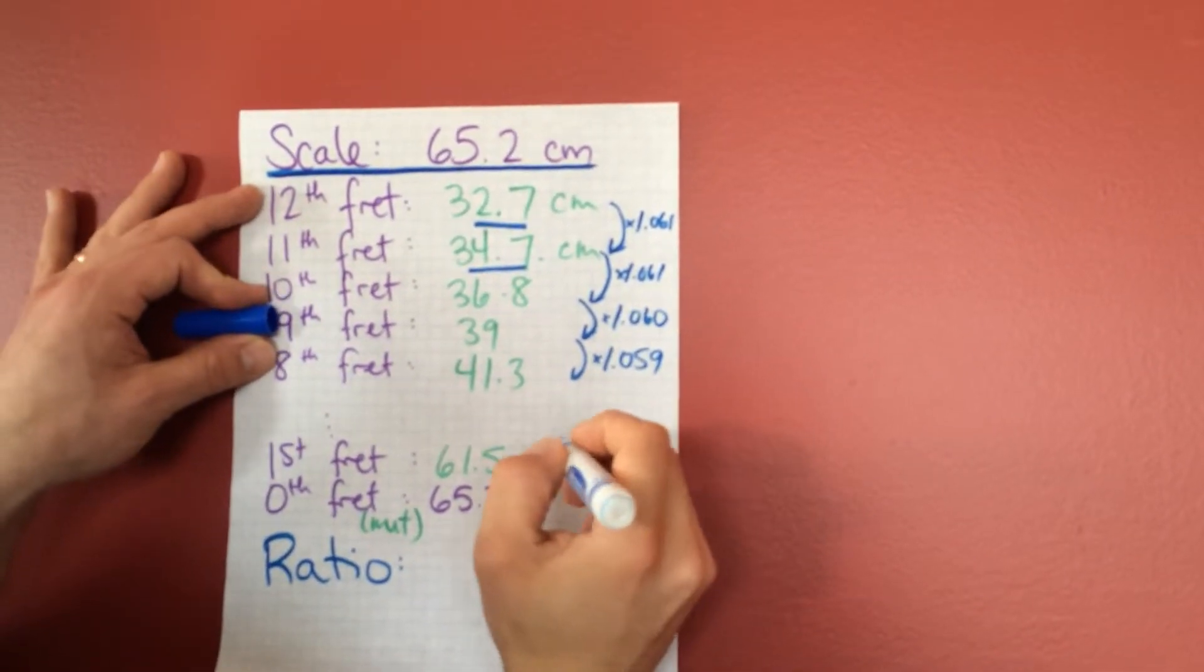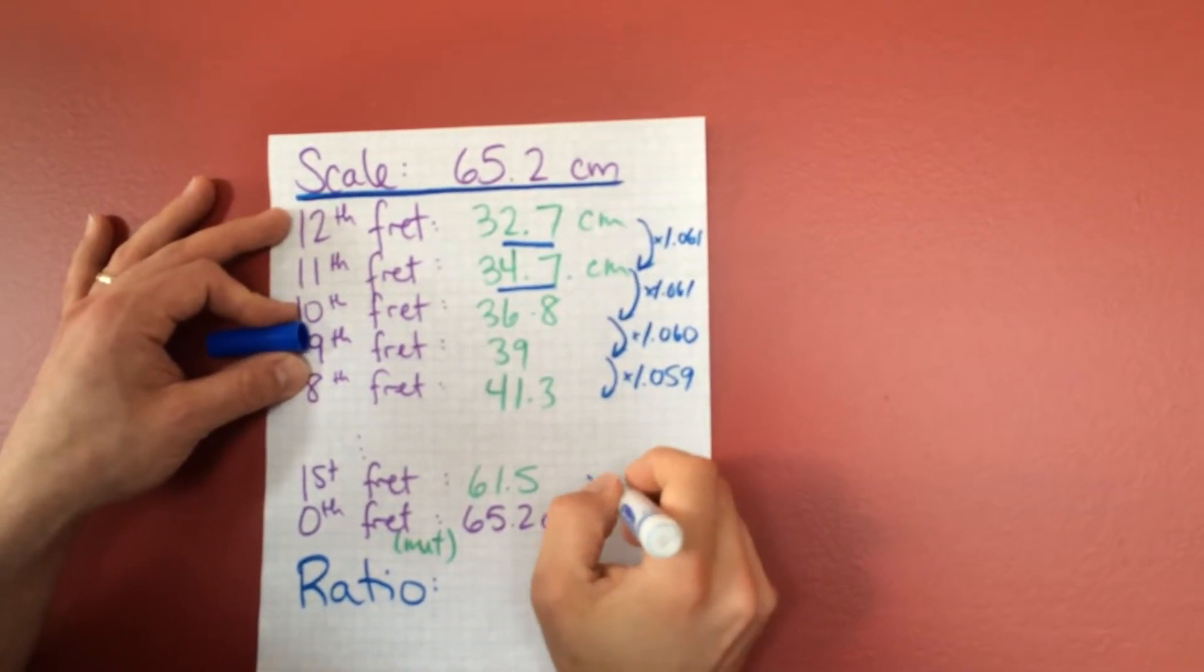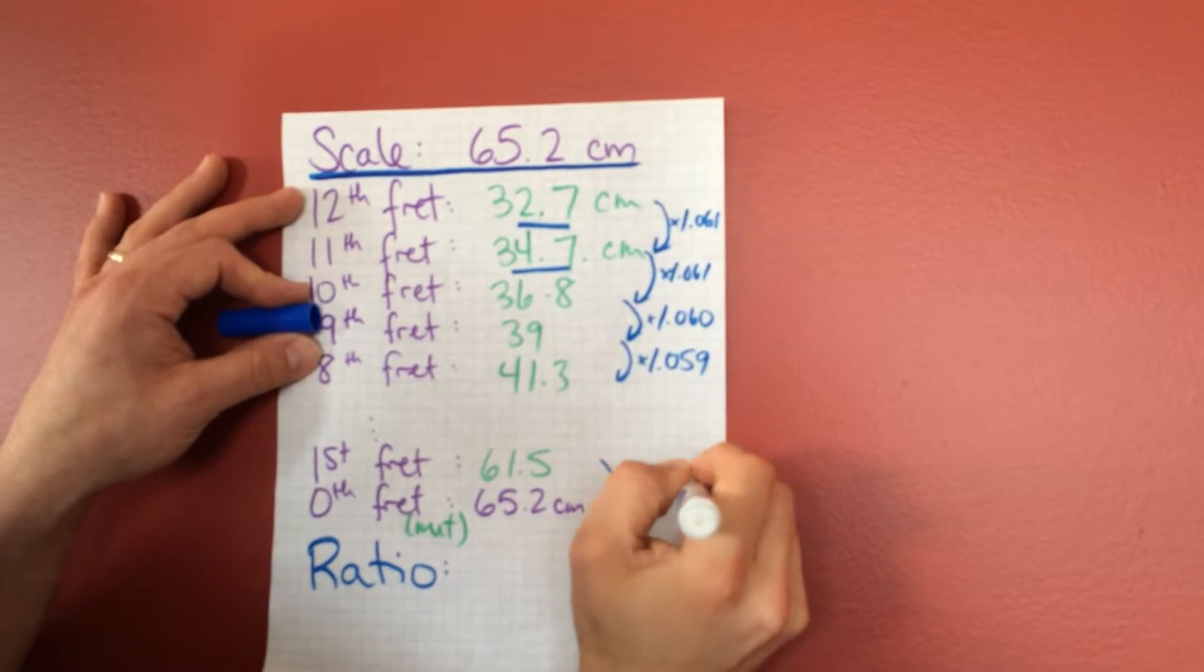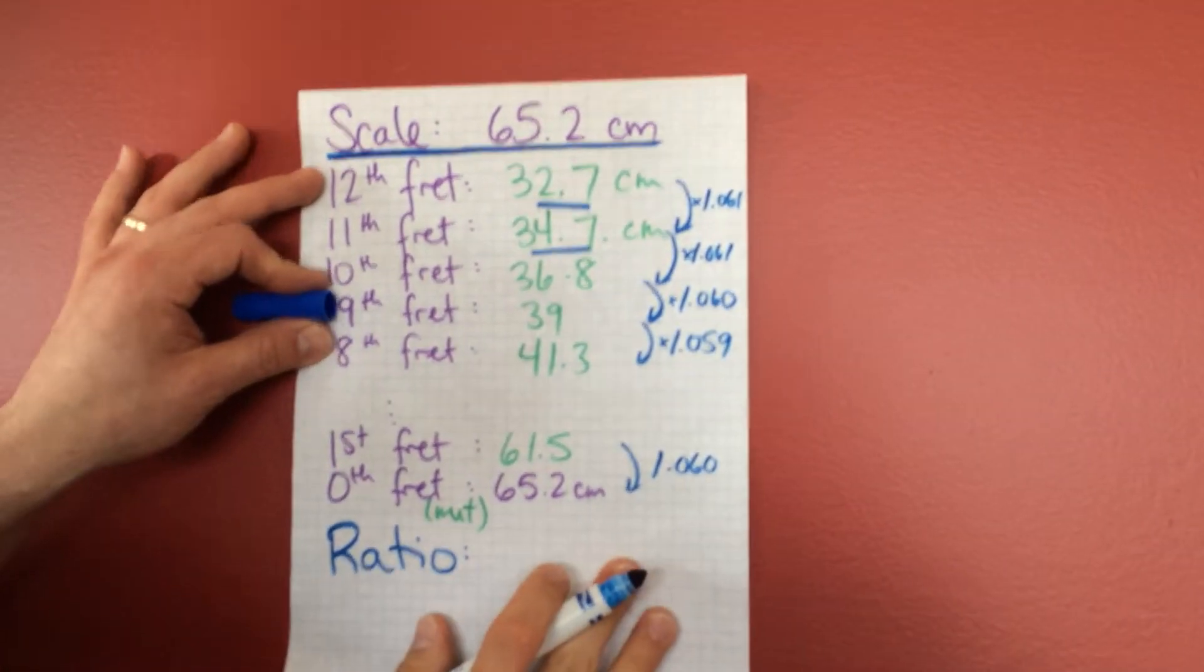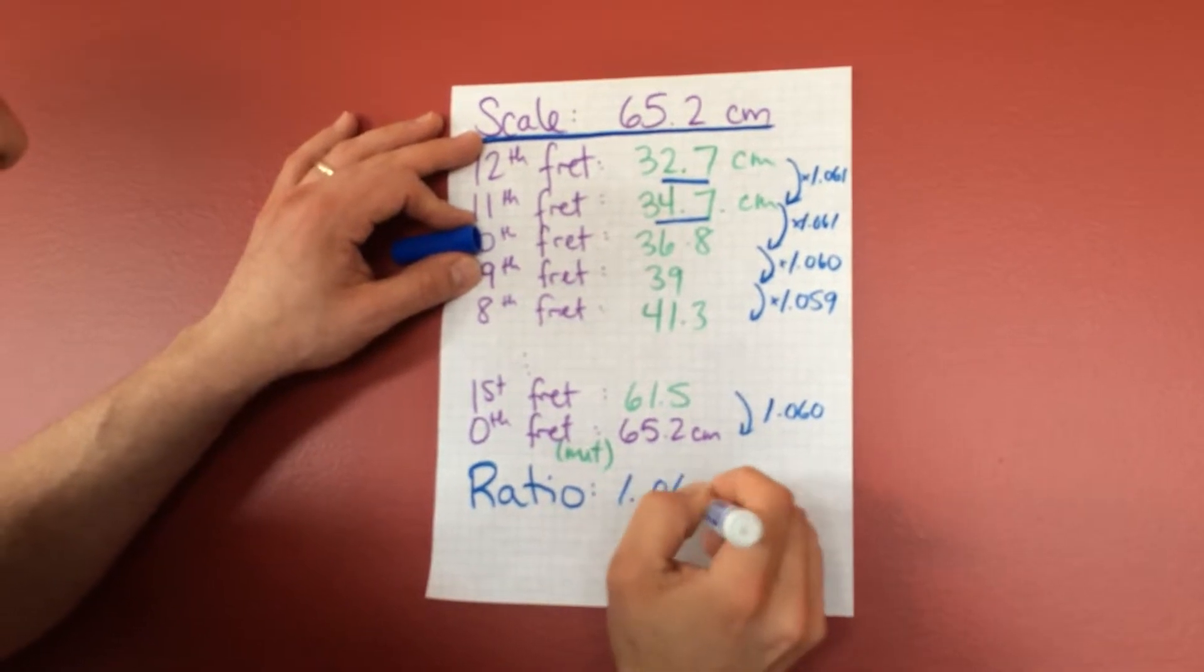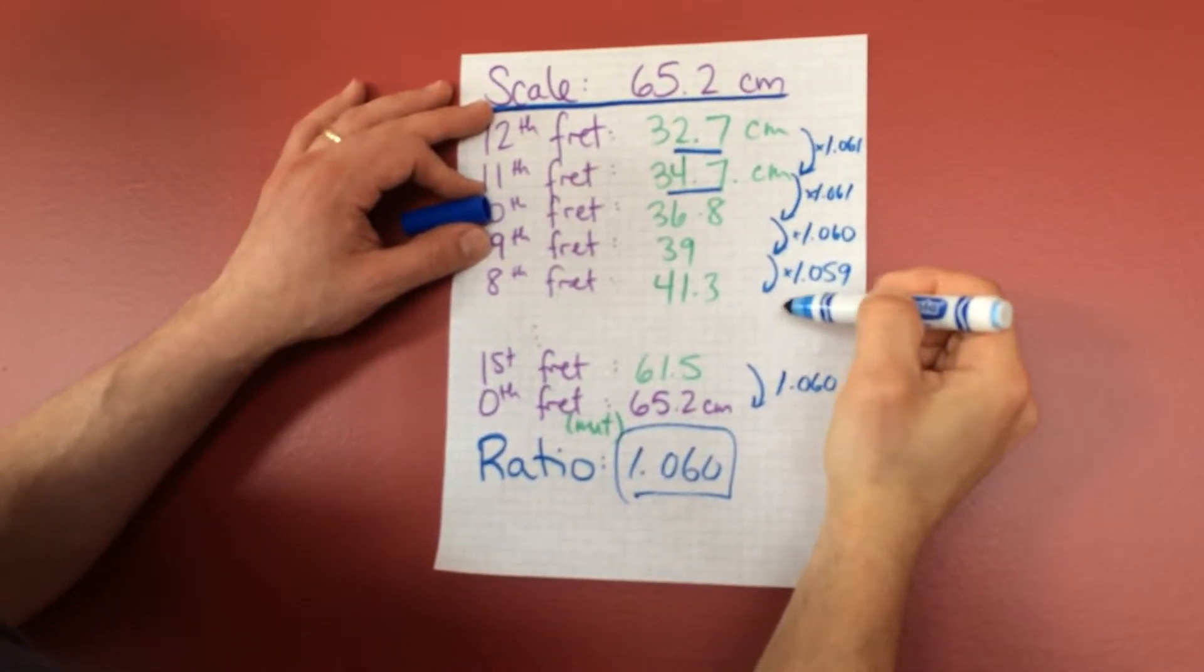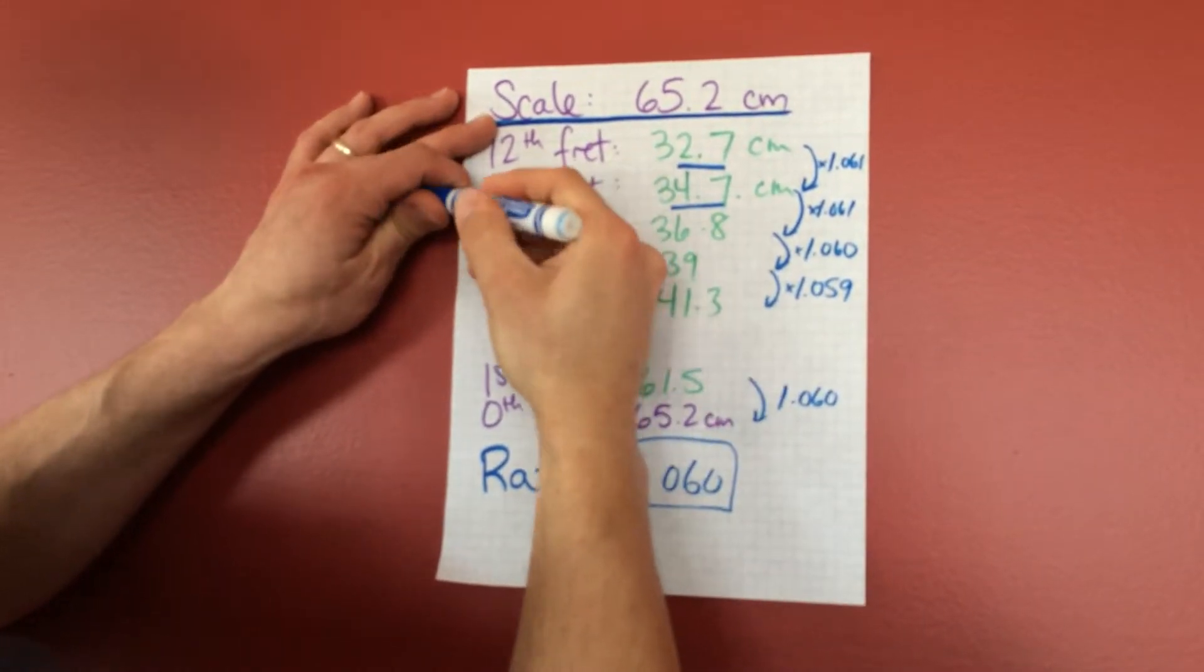Now they should be actually all exactly the same. They're not, only because my tape measure is not so great. This last one here, if I multiply, is about 1.060. So overall, we get this ratio. It looks like about 1.060 is the amount that you multiply every length by to get the next length.